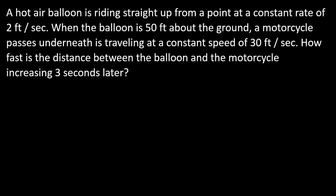A hot air balloon is riding straight up from a point at a constant rate of two feet a second. When the balloon is 50 feet above the ground, a motorcycle passes underneath and is traveling at a constant speed of 30 feet a second. Sorry for the typo there.